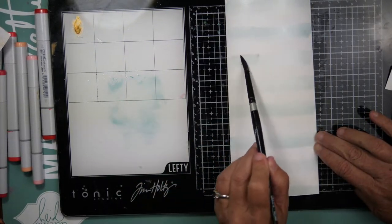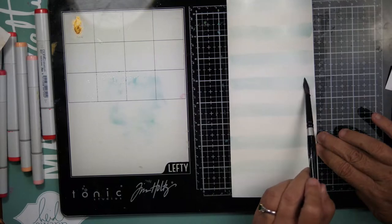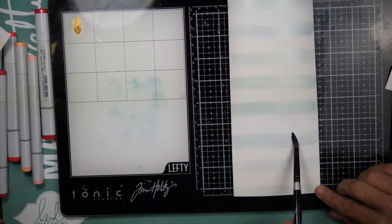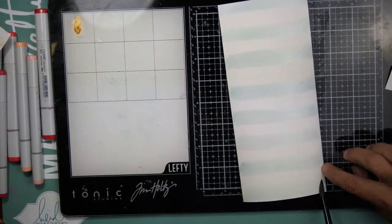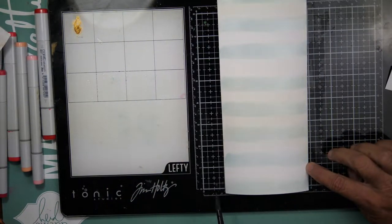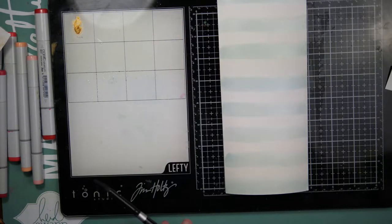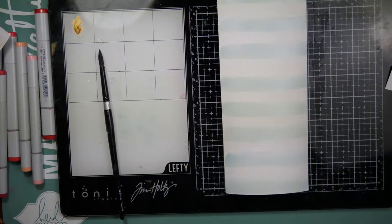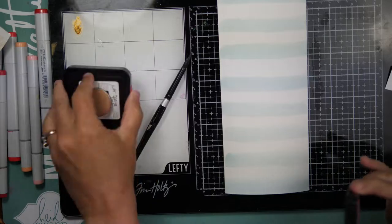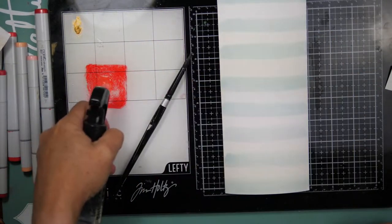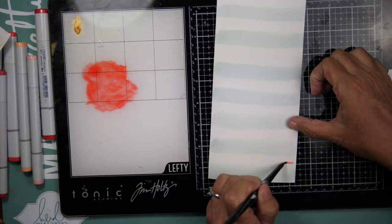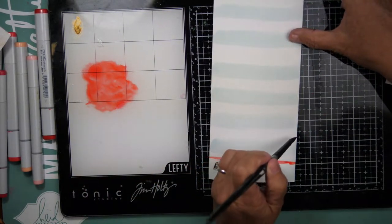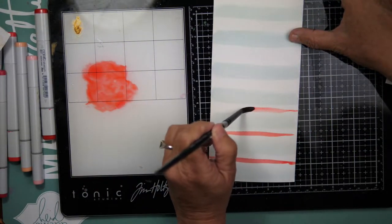And then I will come in with Distress Oxide in Barn Door. I thought it kind of gave it a sailorly type look, you know, like a nautical look. And so I absolutely love this tone of blue. I see me using it frequently. I can see some night skies including some of that. It's kind of a gray blue, at least it showed up that way in this particular piece.